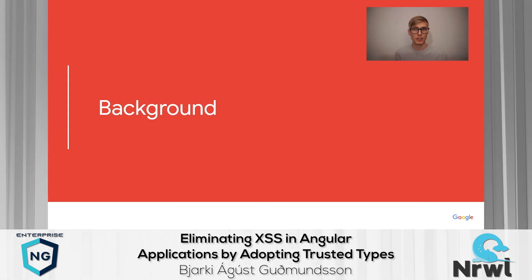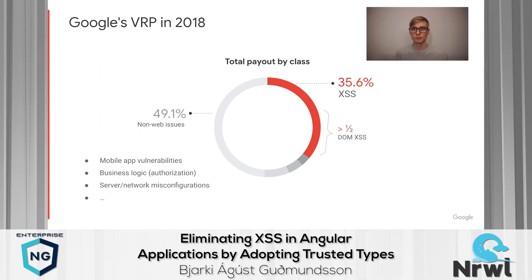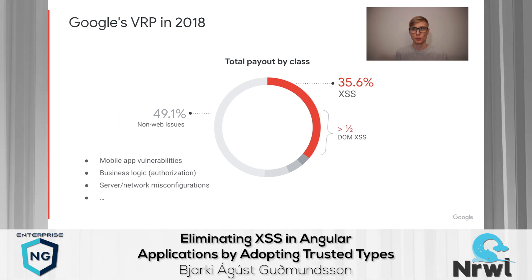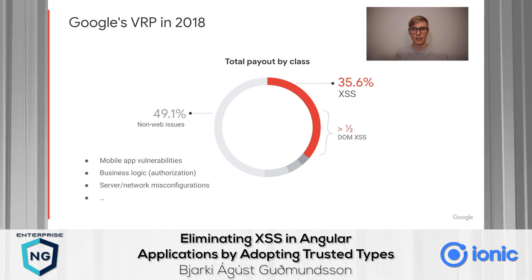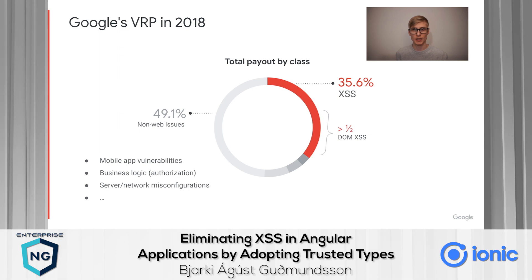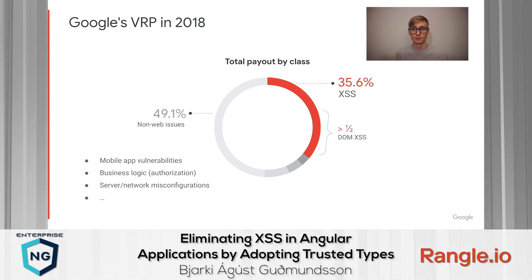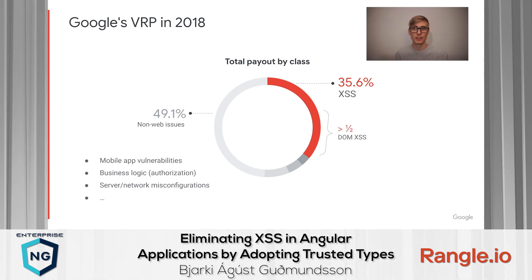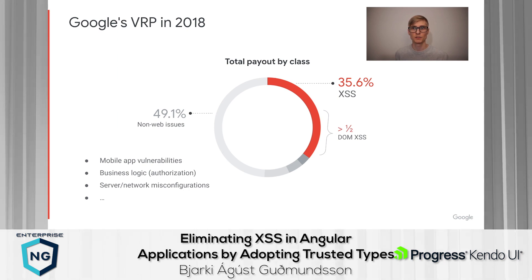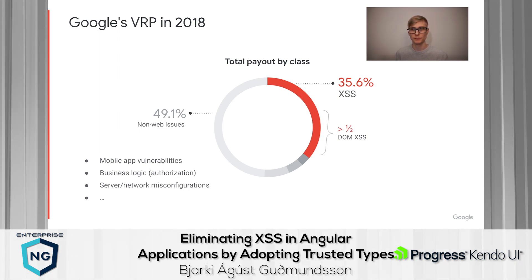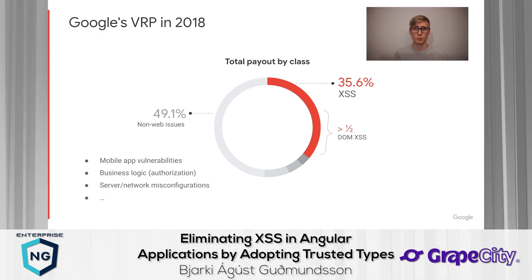Let's start with a little bit of background. Google's VRP is a bug bounty program that pays external security researchers for reporting vulnerabilities. Looking at data from 2018 and the total payouts by vulnerability class, we can see that cross-site scripting accounts for more than a third of the entire budget. And considering that almost half the budget isn't even on web-related issues, XSS is by far the most expensive type of web vulnerability, and this graph looks the same even today as well as in other bug bounty programs.